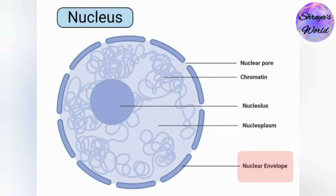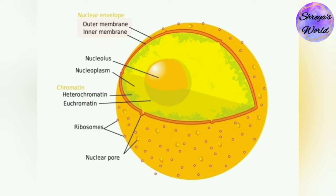First comes the outer membrane. The outer membrane is a lipid bilayer containing two layers of molecules of lipid. The outer layer is made up of lipids, which have ribosomes on the surface that are linked to the endoplasmic reticulum.